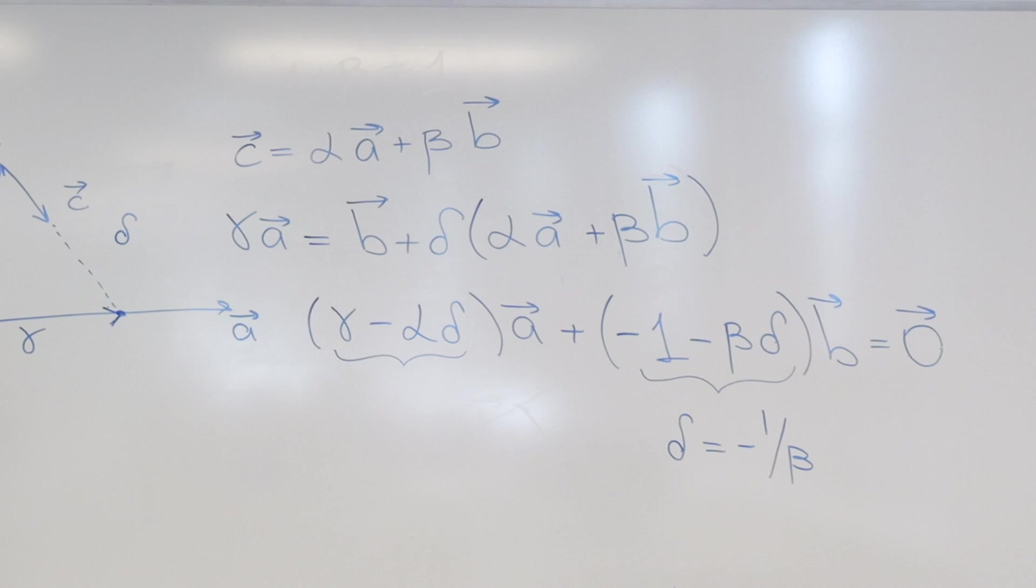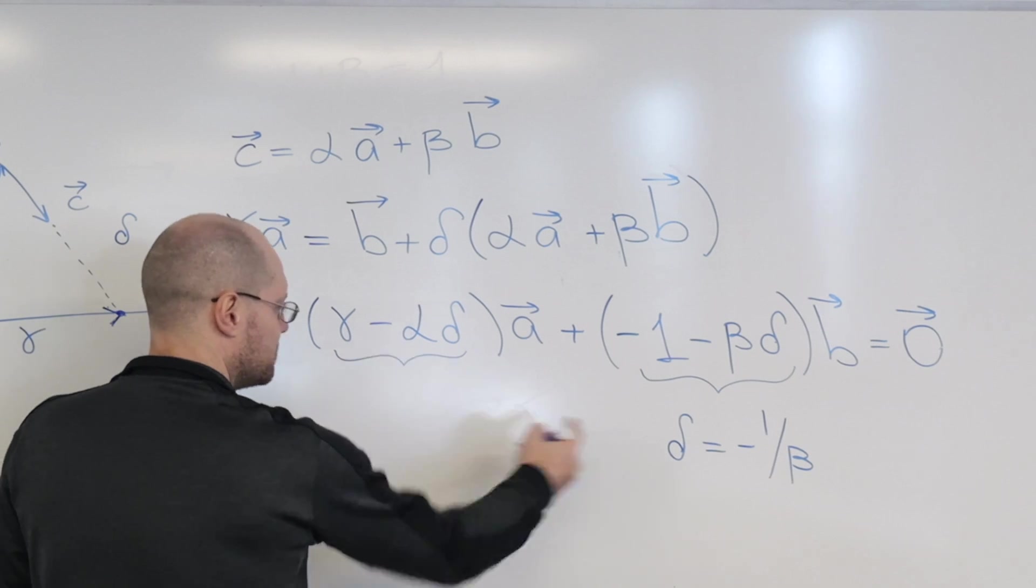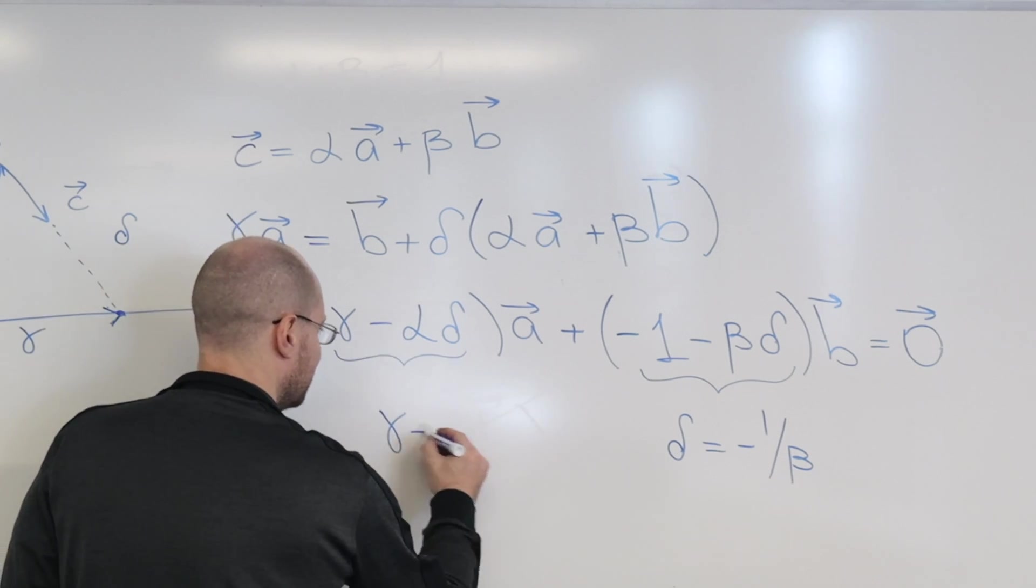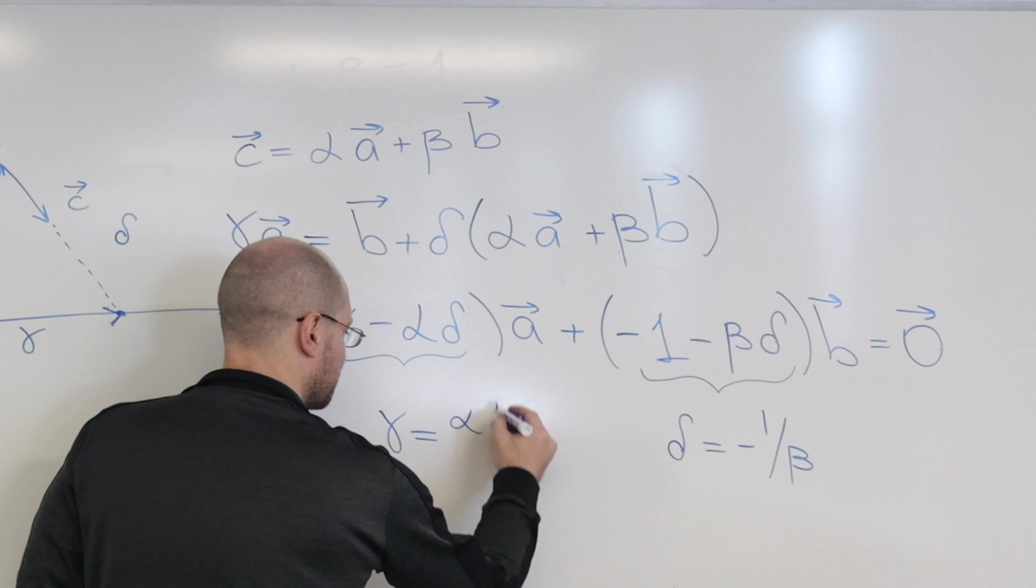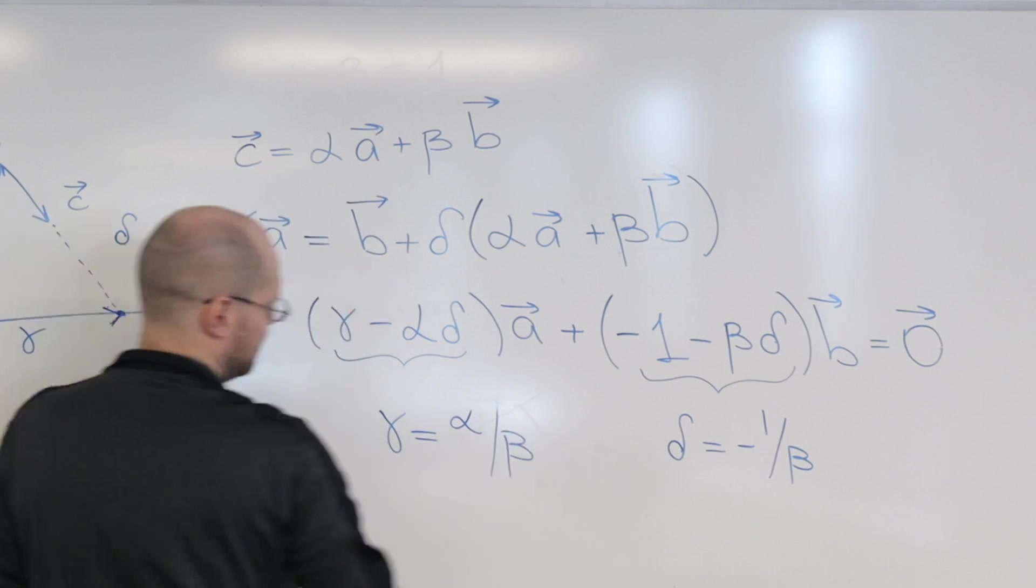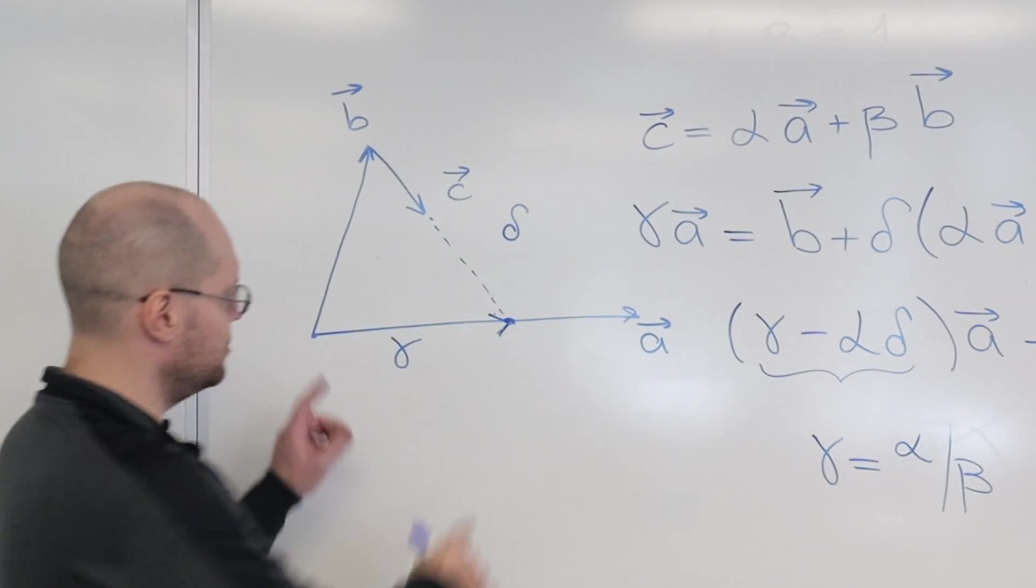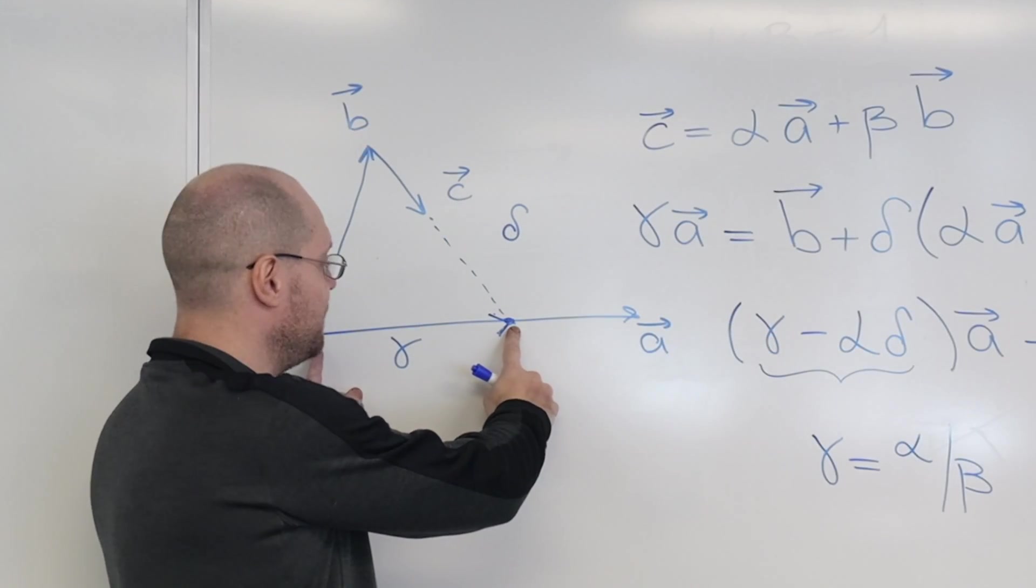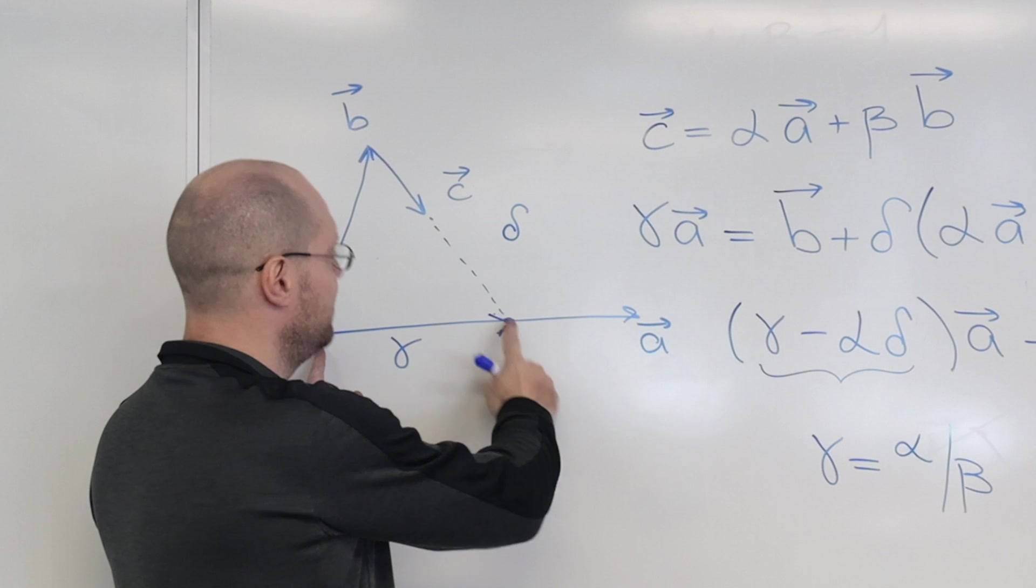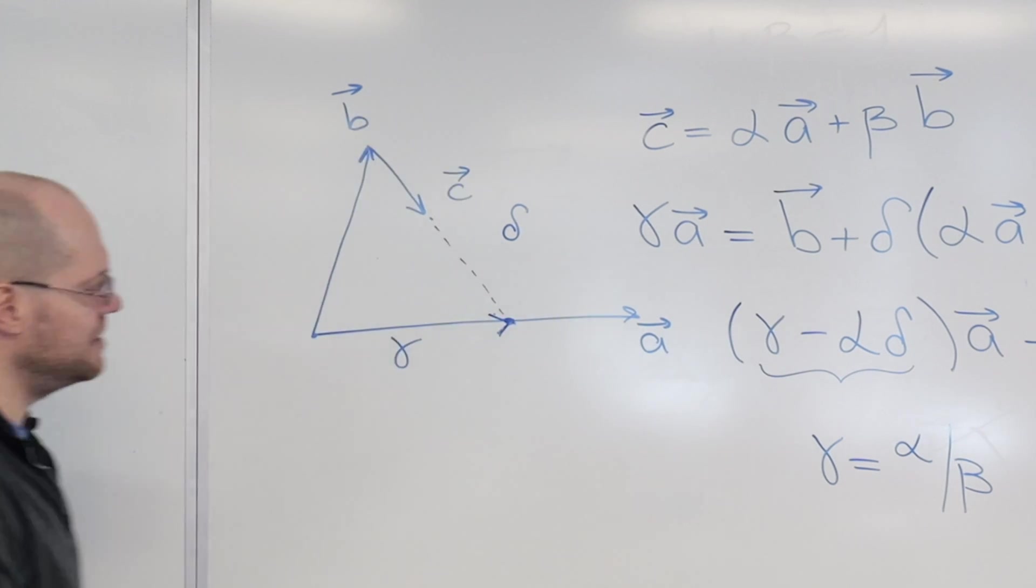Remember, alpha and beta are given. Gamma and delta is what we're looking for. And so from here, gamma equals minus alpha times that. So gamma equals alpha over beta. That's interesting. That's a simple answer. I didn't expect that. Right? So that's how far along A we must be to find where C intersects A. Okay?